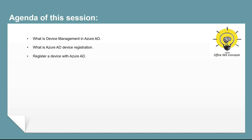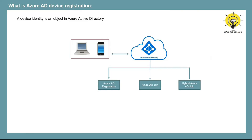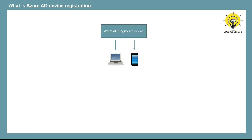We will understand what is device identity, what is Azure AD device registration, and I will demonstrate how to register a device with Azure Active Directory. A device identity is an object in Azure Active Directory — like users, groups, or applications. There are three ways to add a device: Azure AD registration, Azure AD join, and hybrid Azure AD join. This video is focused on Azure AD registered devices; we will cover the other types in upcoming videos.